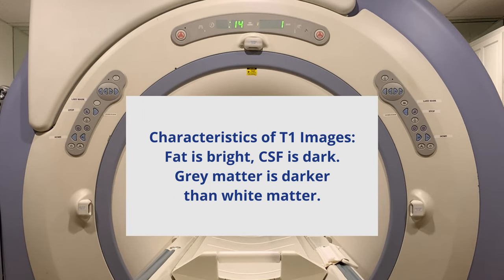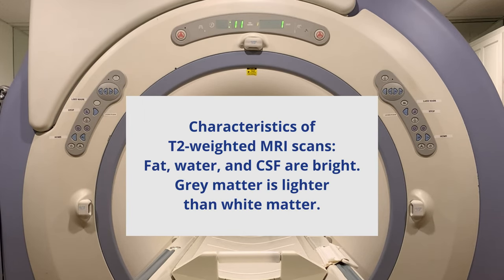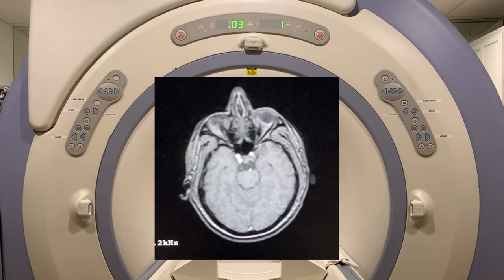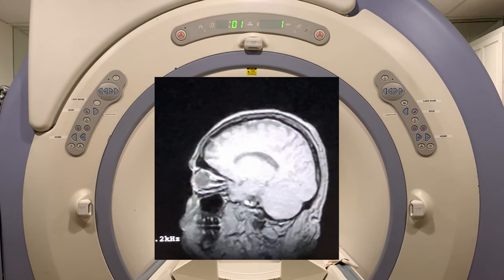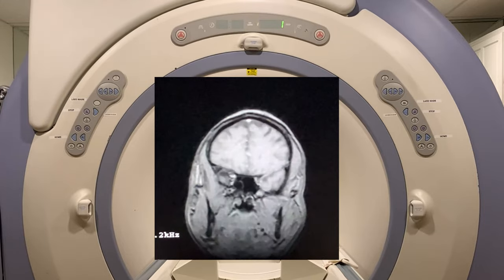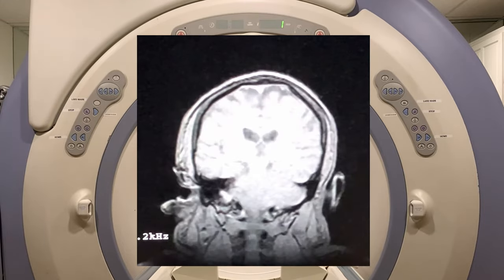Gradient echo pulse sequences are general purpose sequences used to produce 2D and 3D reconstructions. GRE uses short TR and flip angles of less than 90 degrees to excite only a portion of the longitudinal magnetization.